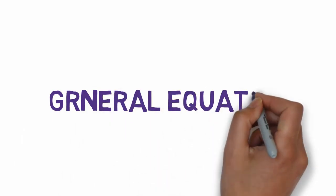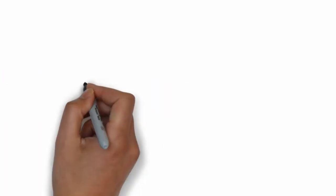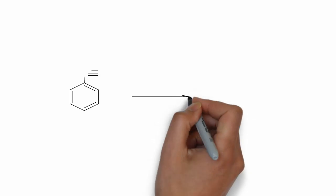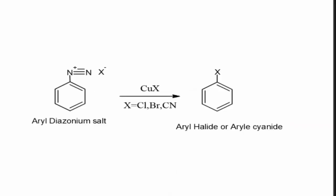General equation: an aryl diazonium salt reacts with a copper halide to give an aryl halide.